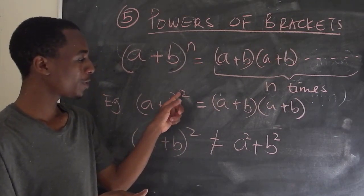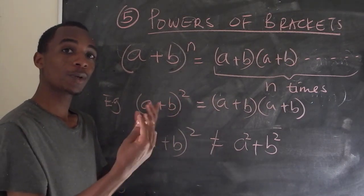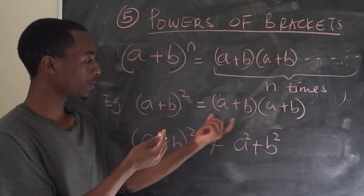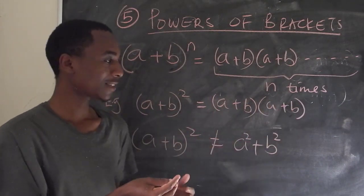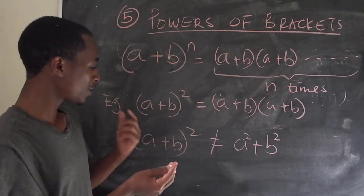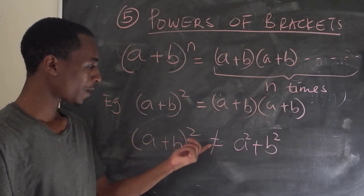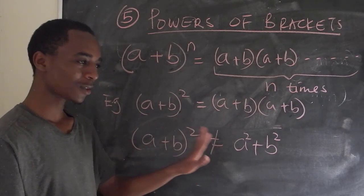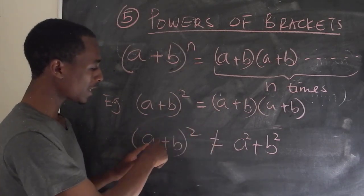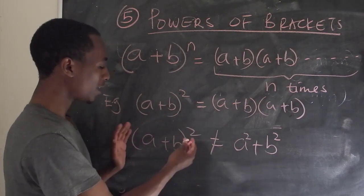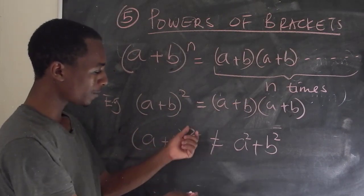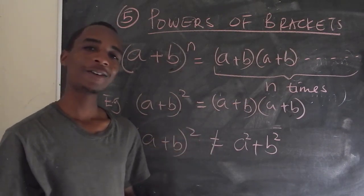a plus b to the power 2 means a plus b multiplied by itself two times: a plus b times a plus b. This is the first time, second time. All right, so it's not the same as a plus b squared equals a squared plus b squared. This is absolutely wrong. And you can't just expand powers like that. You have to multiply out the bracket by itself this number of times.